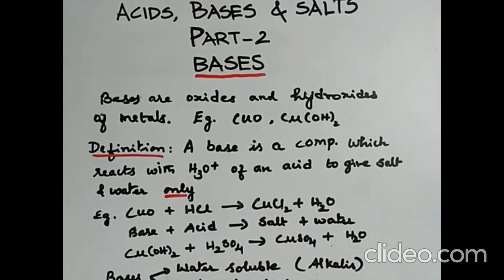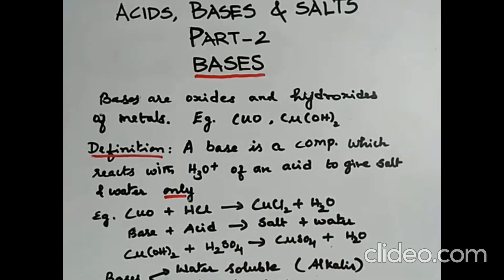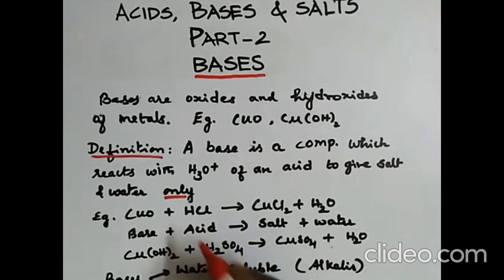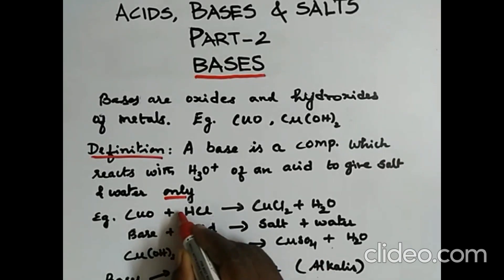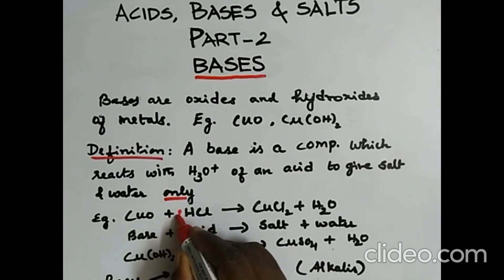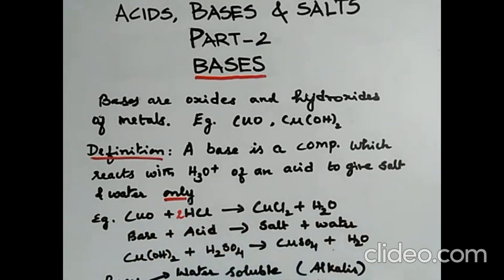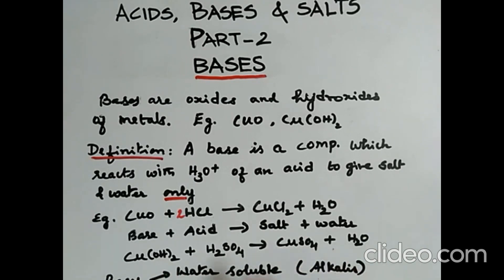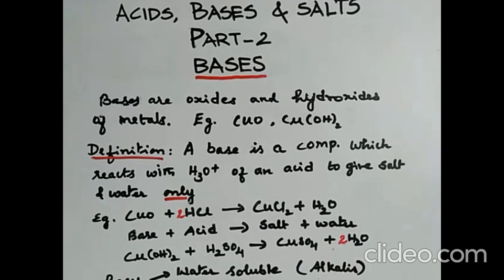The equations are not balanced. The first equation: you need to write a 2 here because there are 2 chlorine atoms. The second equation, you have to check for the hydrogen and oxygen — you have 4 hydrogens, so write a 2 here. So the equation is balanced.